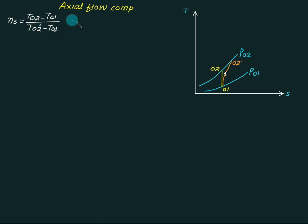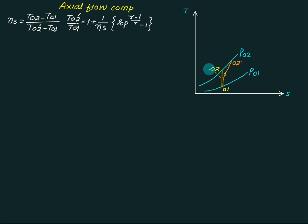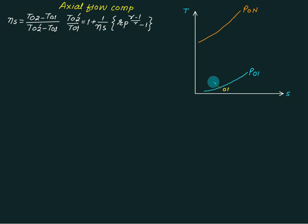Modifying this equation, we can directly calculate T02 dash divided by T01 as one plus a function of stage efficiency and pressure ratio, without separately calculating T02. The pressure ratio in an axial stage compressor is very low, so to achieve an overall pressure ratio of around 8 to 10, a number of stages is required.